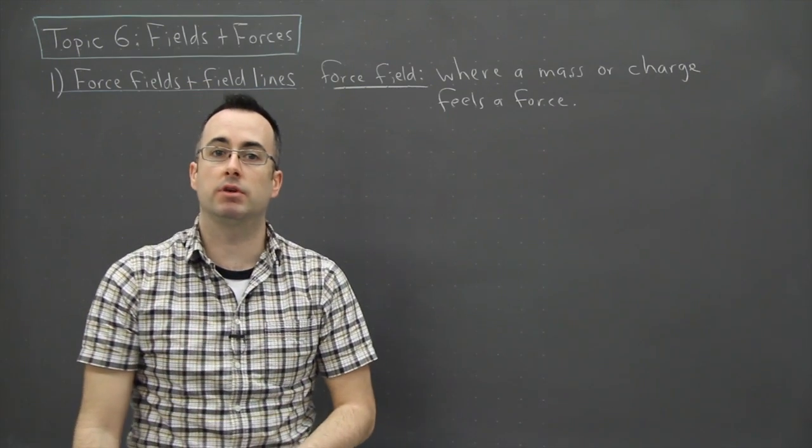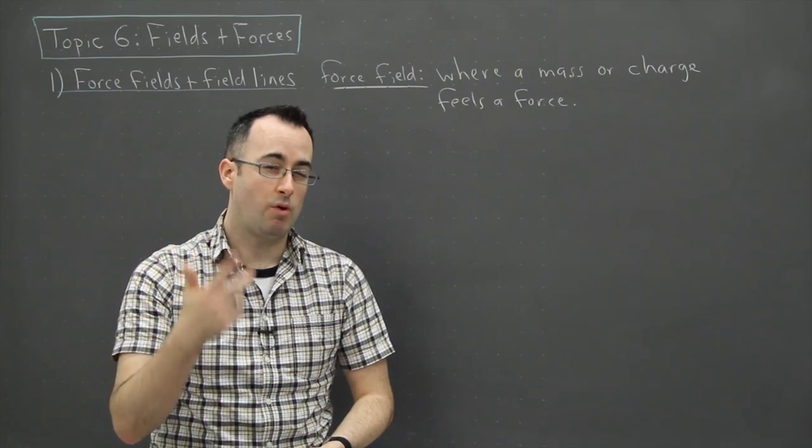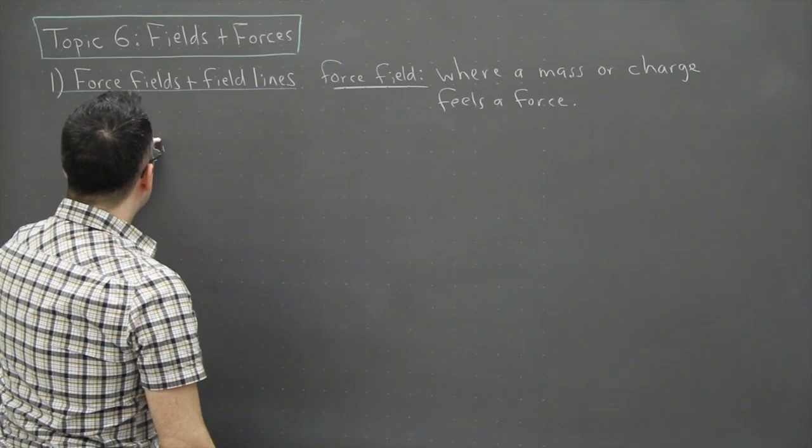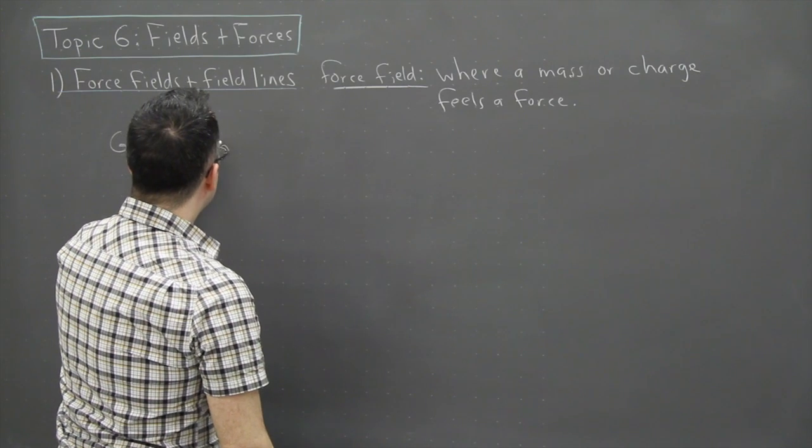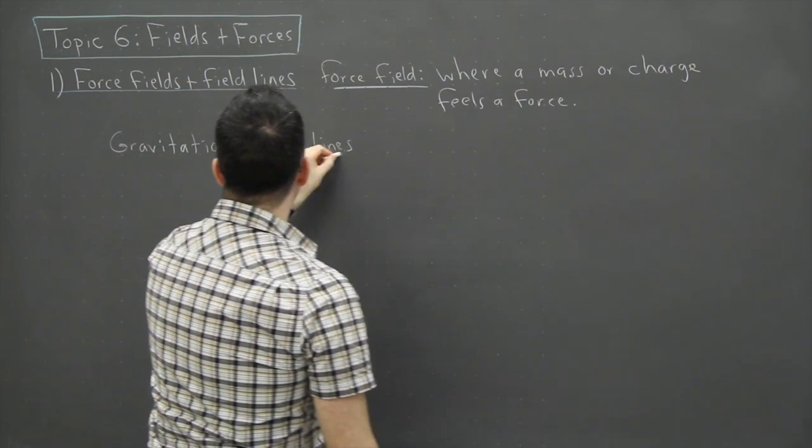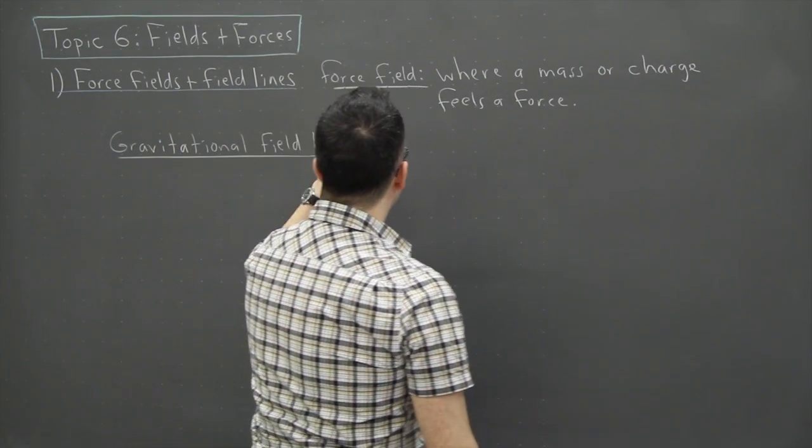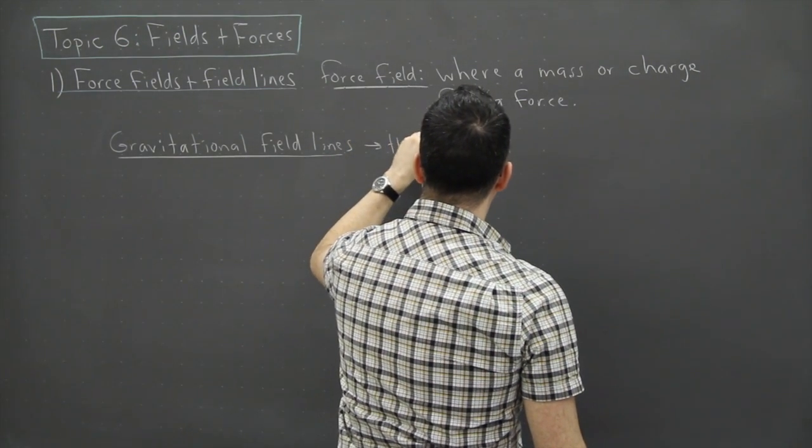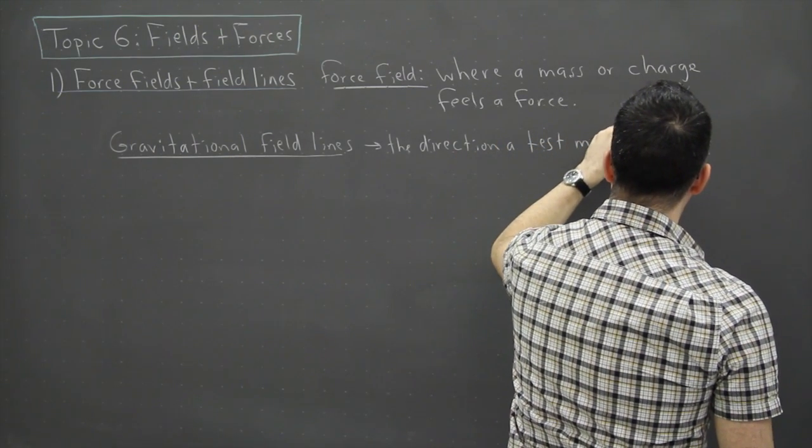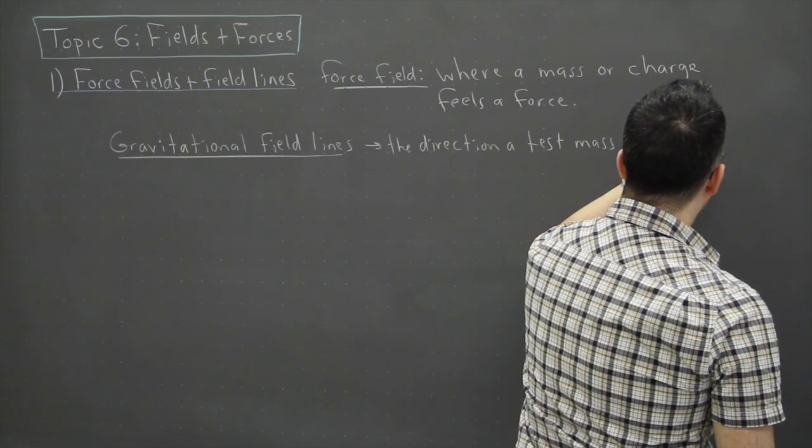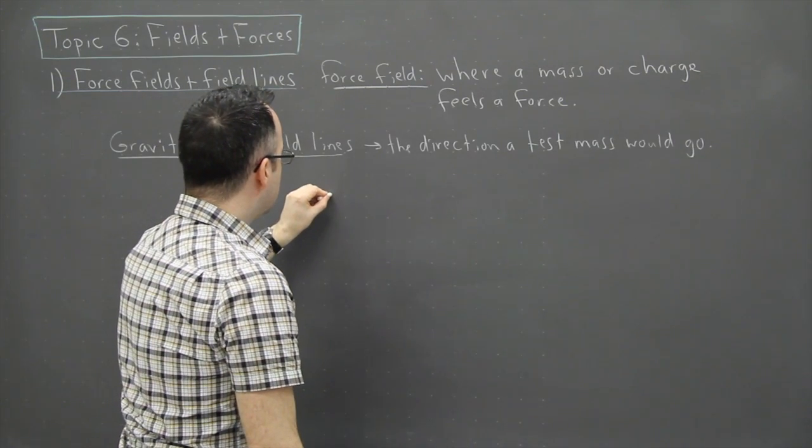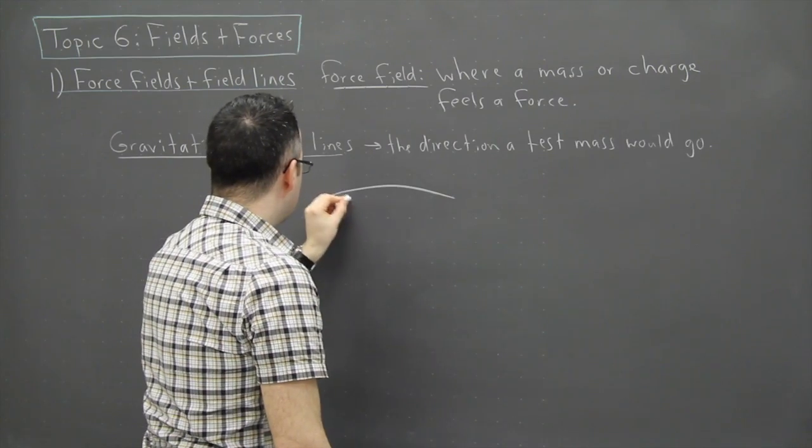So there's going to be three main types of things we're going to be talking about: either gravitational, electric, or magnetic. So I'm going to show you first of all how we deal with gravitational field lines. This is going to be, we draw them as the direction a test mass would go. That's actually how we draw these. That might seem really silly. I'll just give you a quick little drawing here. So let's just say this right here is the Earth. That's the Earth.